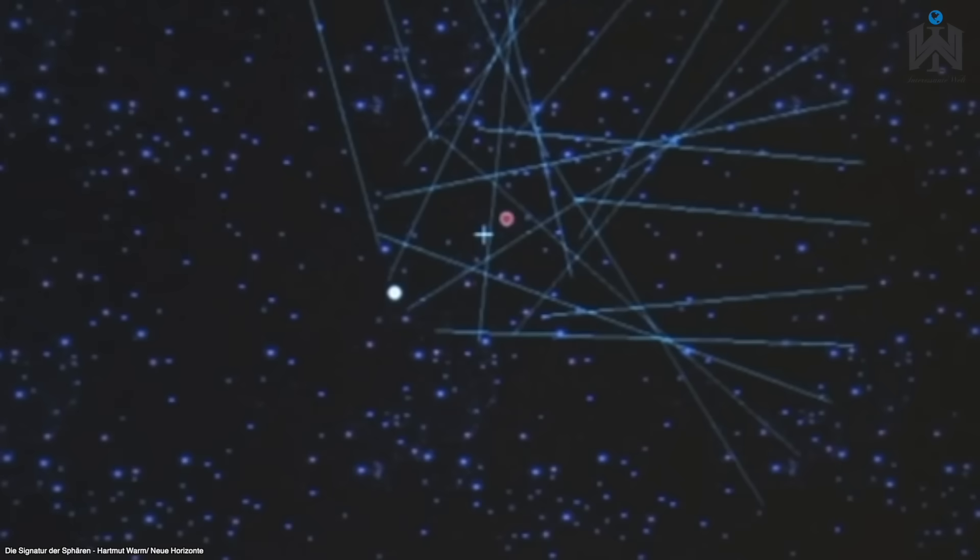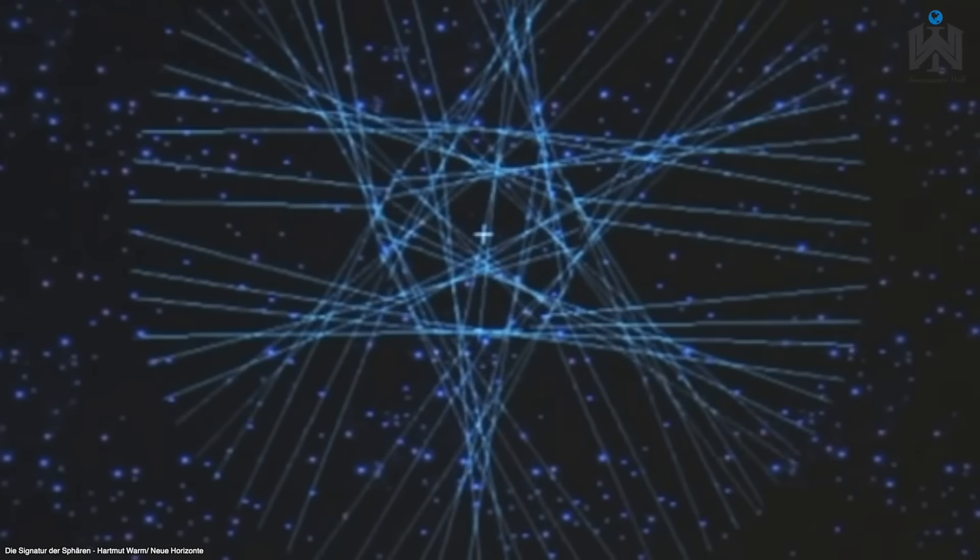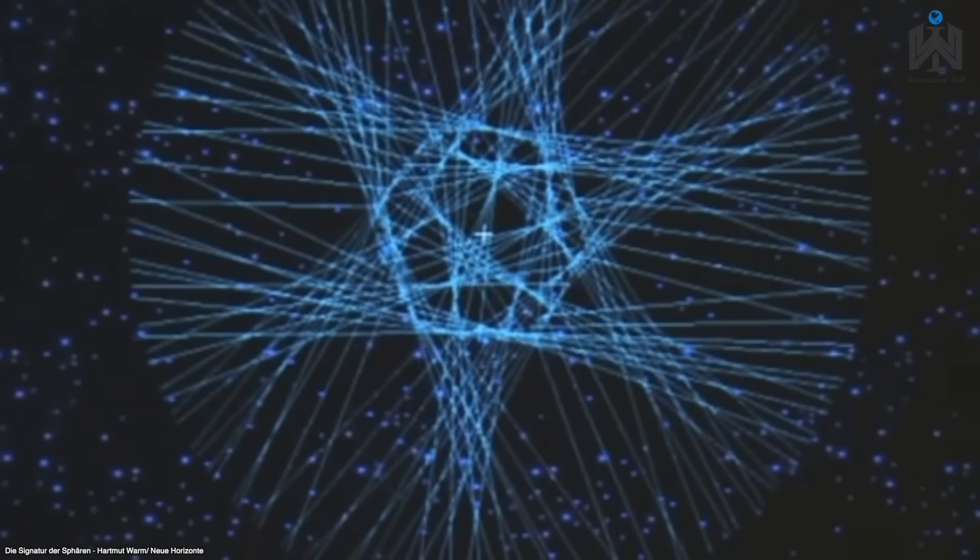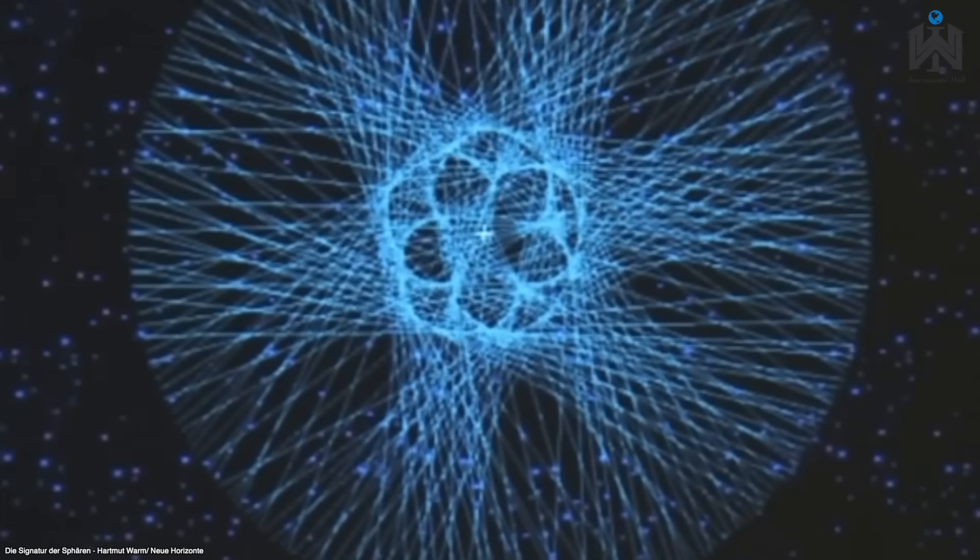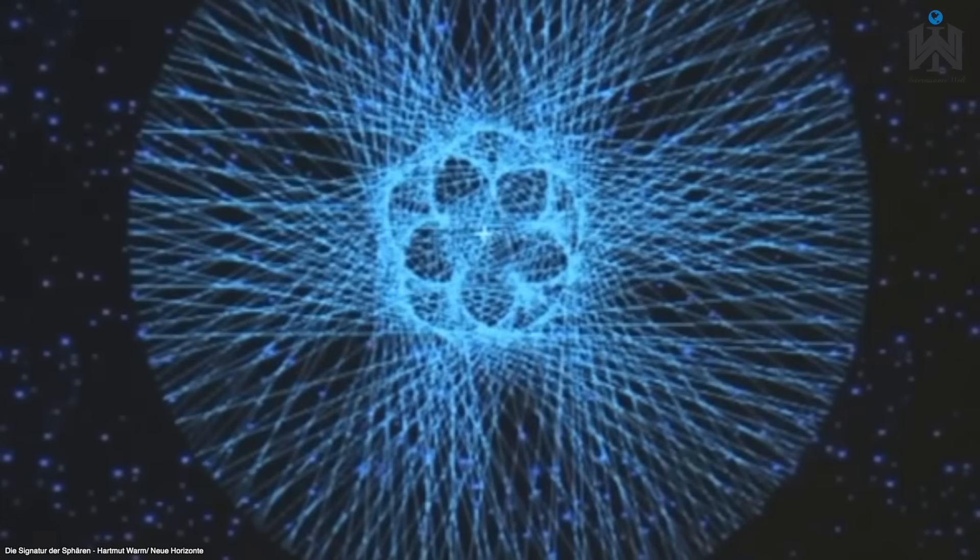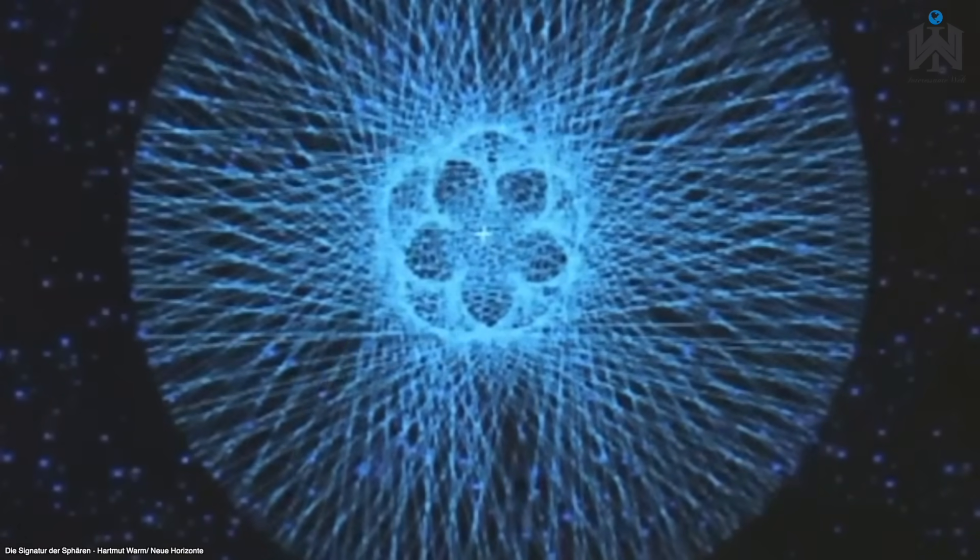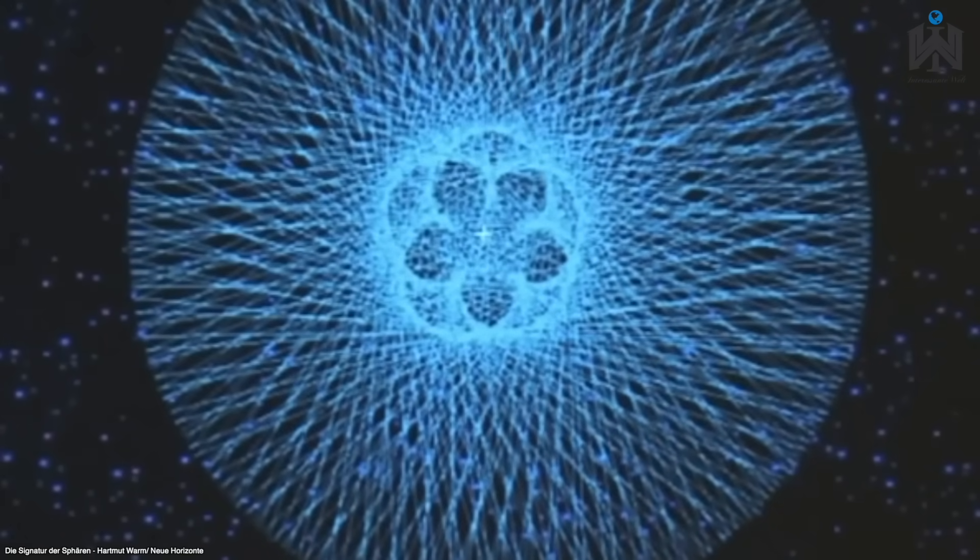Hartmut Warm betrachtet auch drei Planeten auf einmal. Er nimmt beispielsweise zum Jupiter und Uranus noch den Mars dazu. In den Momenten der Konjunktion zwischen Mars und Jupiter zeichnet er eine Gerade zwischen Jupiter und Uranus. Dieses Mal entsteht erst nach etwa 1000 Jahren eine schöne Figur.